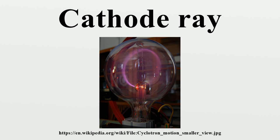This accidental fluorescence allowed researchers to notice that objects in the tube in front of the cathode, such as the anode, cast sharp-edged shadows on the glowing back wall. In 1869, German physicist Johann Hittorf was first to realize that something must be traveling in straight lines from the cathode to cast the shadows. Eugen Goldstein named them cathode rays.